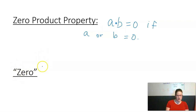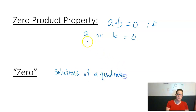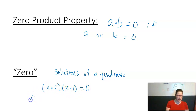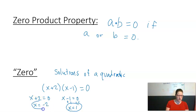The solutions to a quadratic are sometimes called zeros because of this property. If I have (x+2)(x-1), I can find the solutions — the zeros — by taking each factor and setting it equal to zero, then solving for x. Setting x+2 = 0 gives x = negative 2; setting x-1 = 0 gives x = 1. These are the values that make the equation equal zero, which is why they are called zeros.